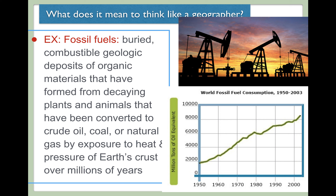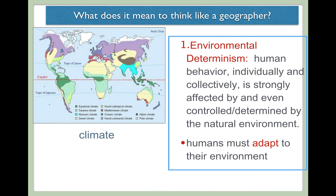Fossil fuels help us understand the dependency and the interactions between humans and their environment, particularly given that we are doing an effective job of depleting the world of fossil fuels. That's a way in which the natural environment is influencing human behavior, and how human behavior will now have to adapt to the fact that we can't wait millions of years — we have to consider alternative sources of energy. That's an example of human-environment interactions.